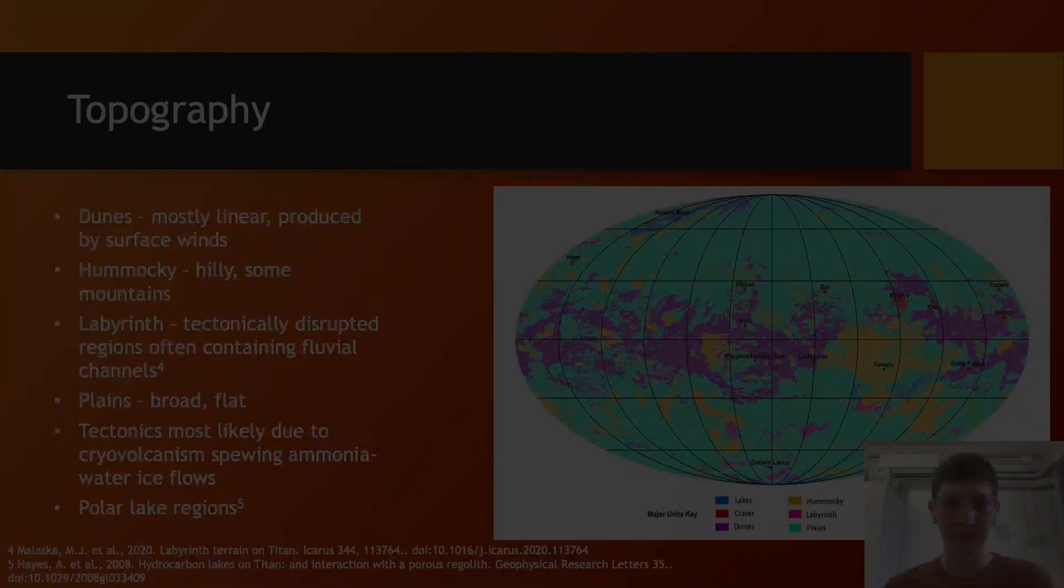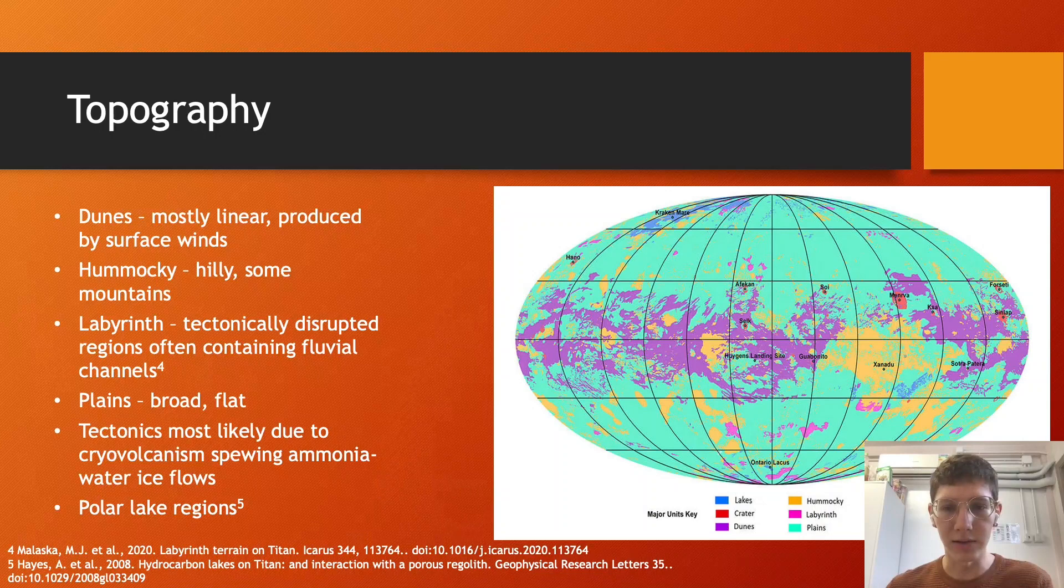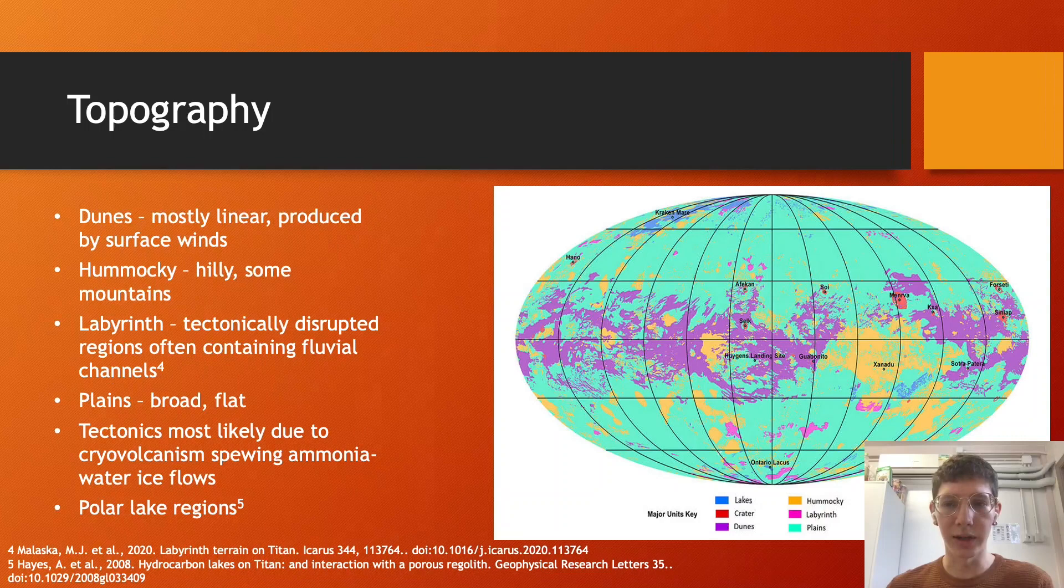So today we'll be focusing mainly on the surface hydrocarbon reservoirs found in Titan's polar regions, including several large seas and many smaller lake features occurring at northern high latitudes. Radar measurements from Ligeia Mare, the second largest sea, suggest a liquid composition of nearly pure methane, implying these lakes interact with the atmosphere and are linked to the weather and climate systems.